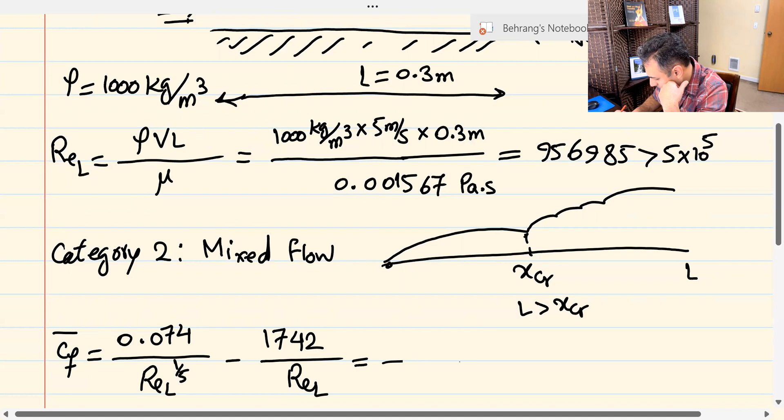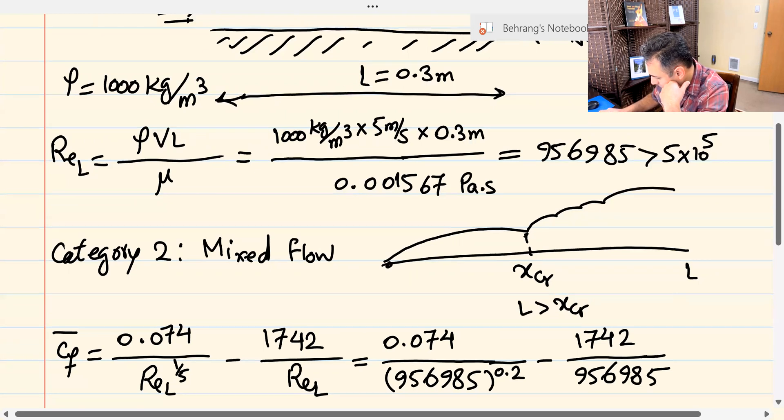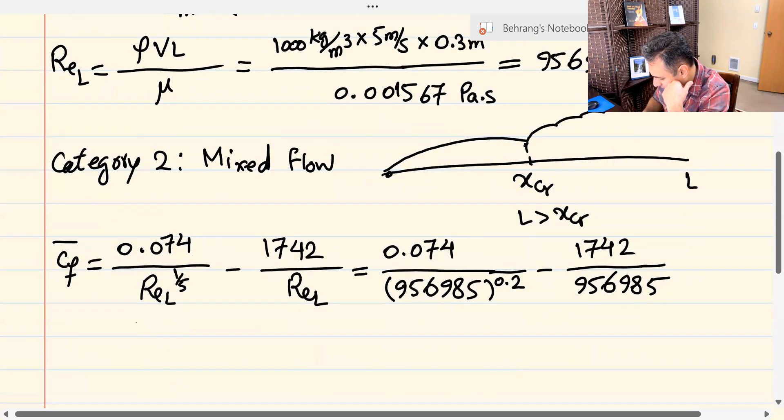So I'm going to calculate this number. So that would be 0.074 over 956,985, the power is 0.2, 0.2 is 1 over 5, minus 1742 over 956,985. I suggest that you actually use your calculators and calculate this to make sure that the numbers I am showing here are correct, but I already calculated it. And the value is 0.00289.